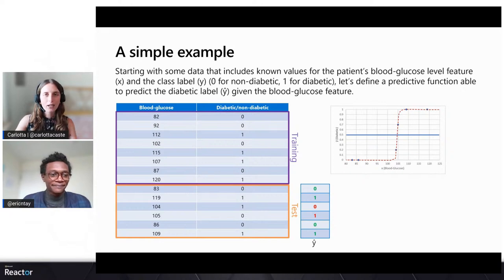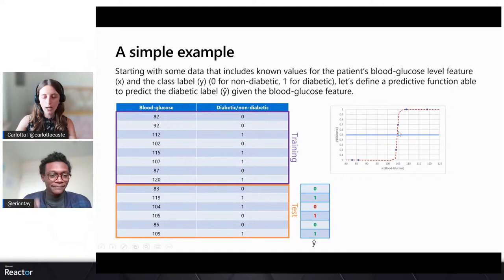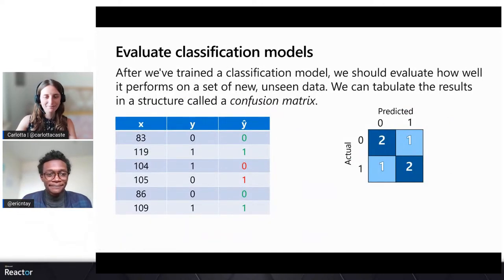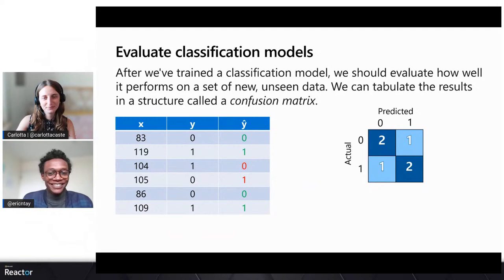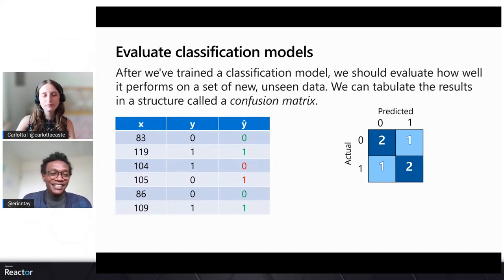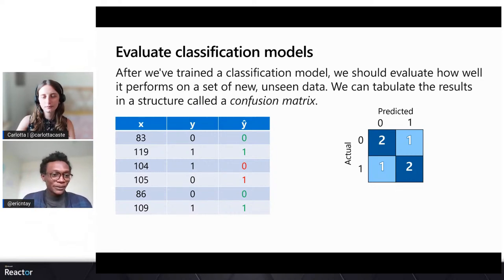I'll let Eric better explain which kinds of measures we can use for evaluating a binary classification model. Thanks for that great explanation. The core essence is seeing how a model performs on new data. That brings us to evaluating classification models, which is really one of the most important parts in the whole model building process. After you've built and trained a classification model, we should evaluate how well it performs on new unseen data to get a better glimpse of how it would perform on real-world data.